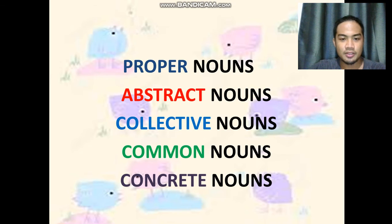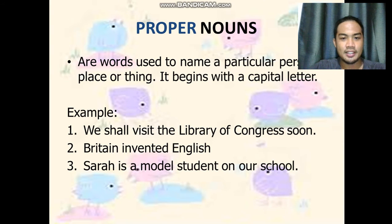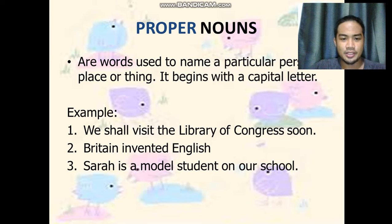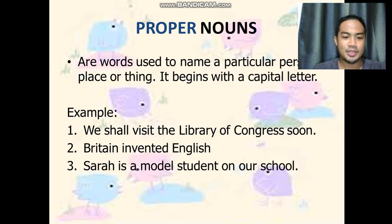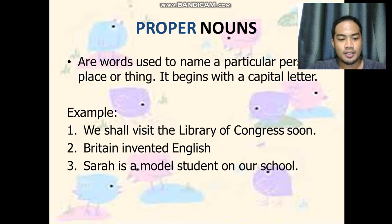Types of nouns include five: proper nouns, abstract, collective, common, and concrete. The first type is the proper noun. Proper nouns are words used to name a particular person, place, or thing, and it begins with a capital letter — that is the key word. For example: 'We shall visit the Library of Congress soon.' 'Britain invented English.' 'Sarah is a modest student in our school.' The proper nouns there are: Library of Congress, Britain, English, and Sarah.